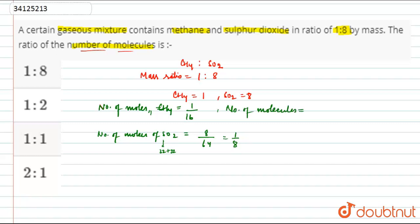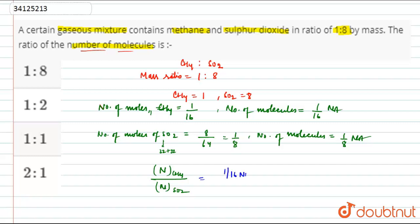The molecules of CH4 will be equal to 1 by 16 times Na. And the number of molecules of SO2 will be equal to 1 by 8 times Na. The ratio is the number of molecules of CH4 divided by the number of molecules of SO2. This is 1 by 16 Na divided by 1 by 8 Na, which gives 8 by 16, that is 1 by 2. So the ratio is 1 is to 2.